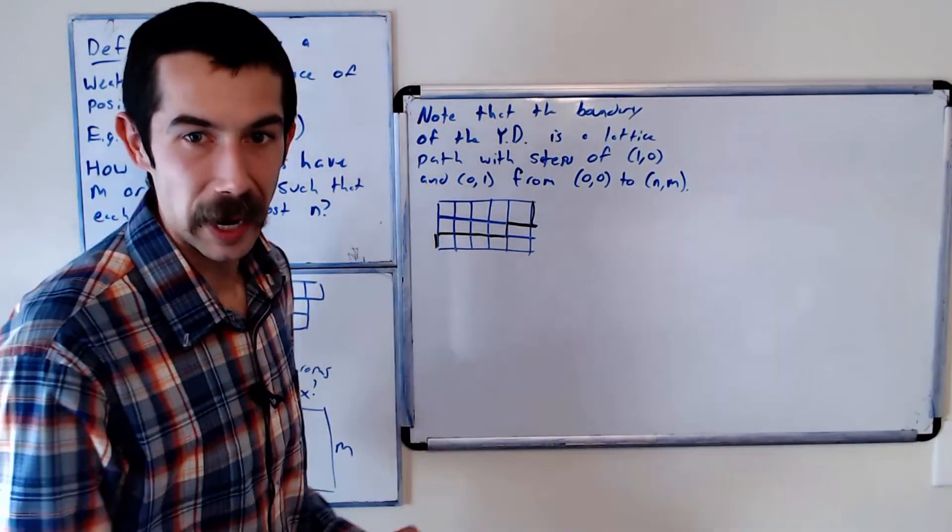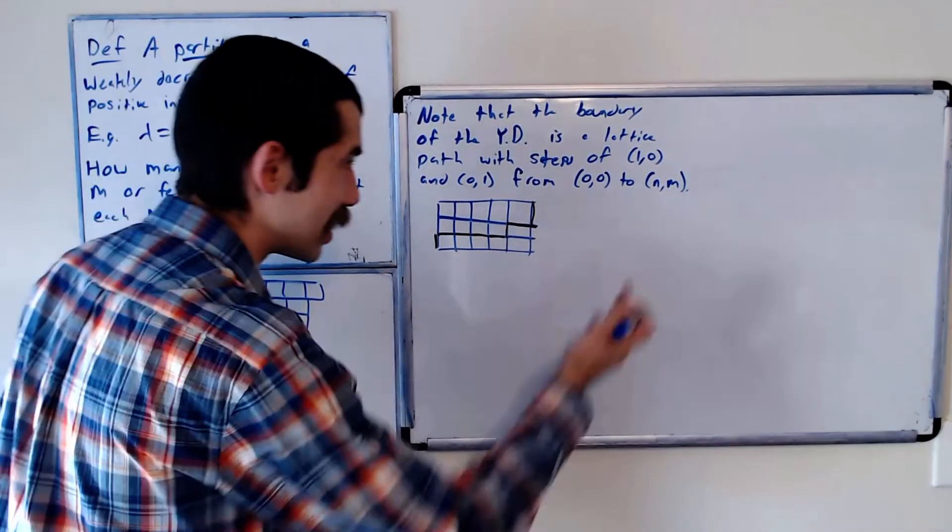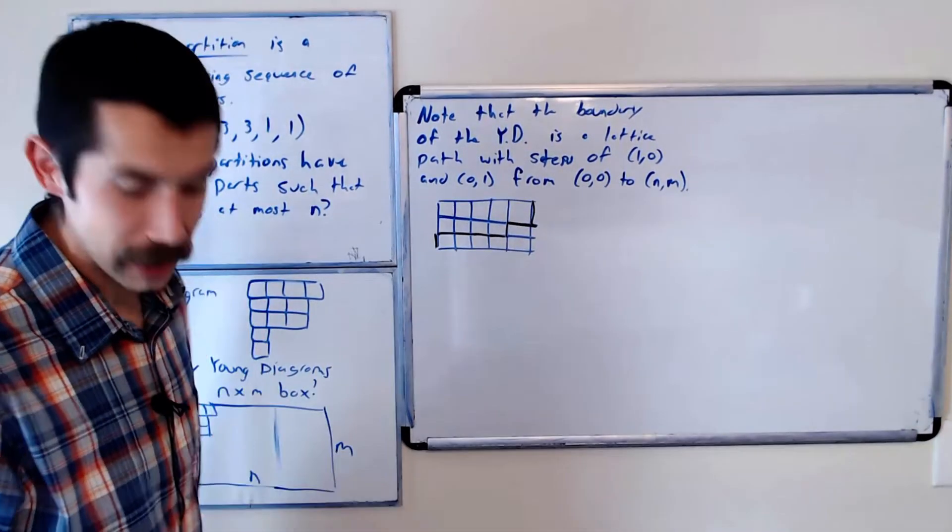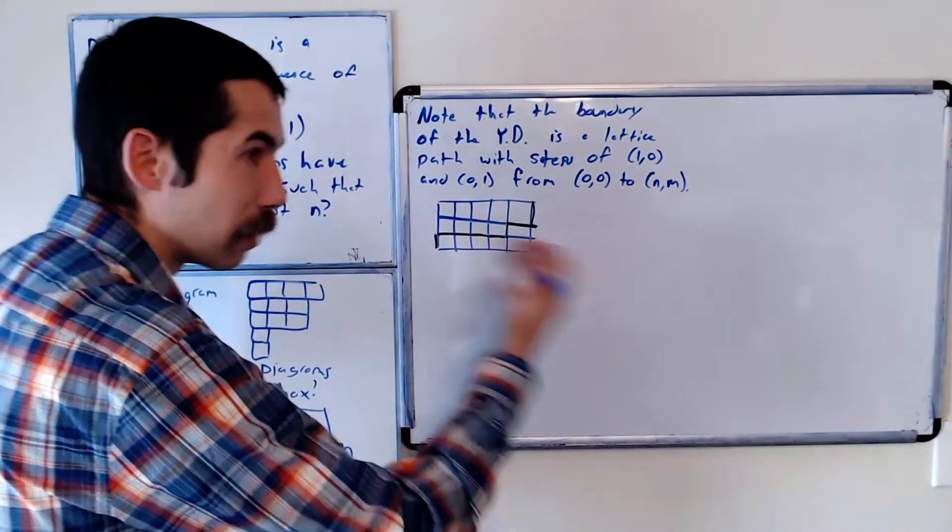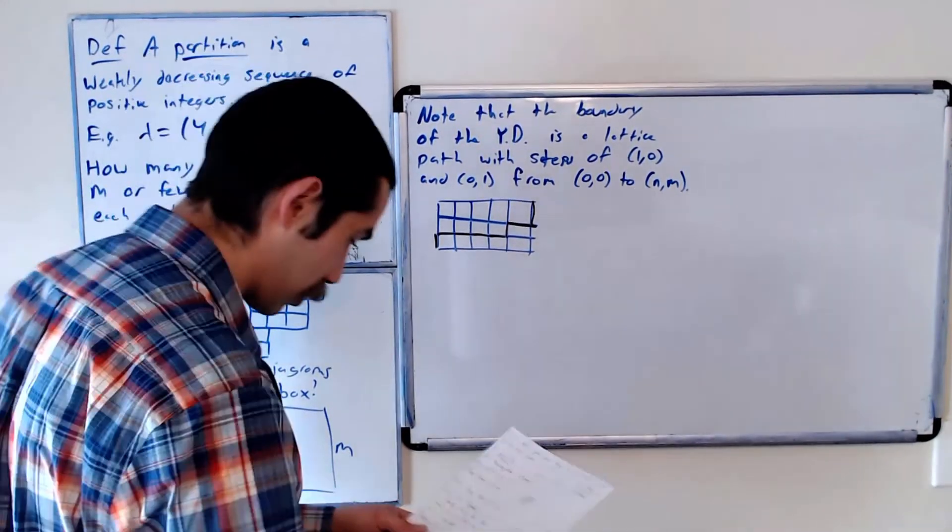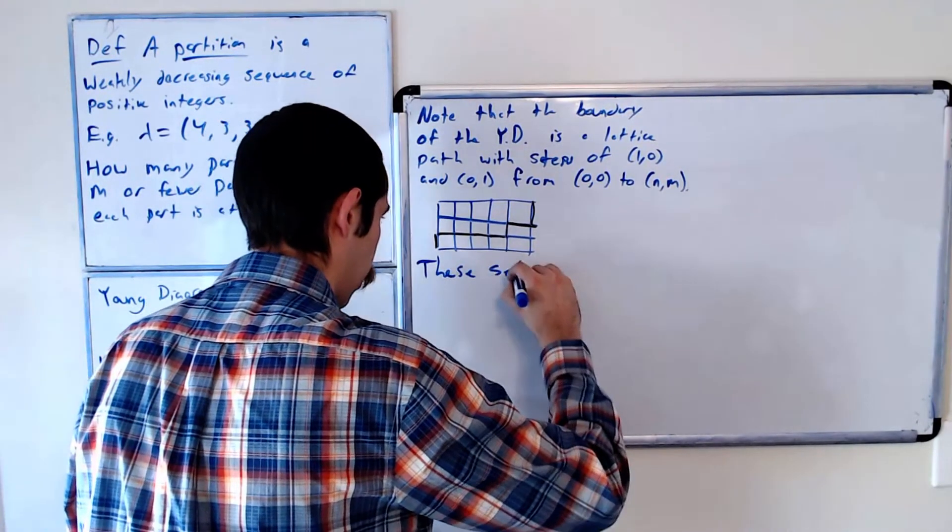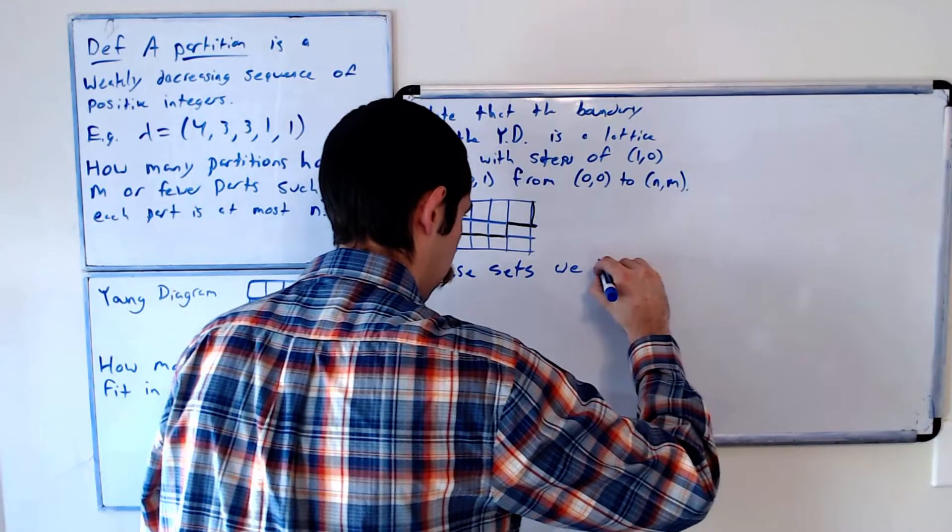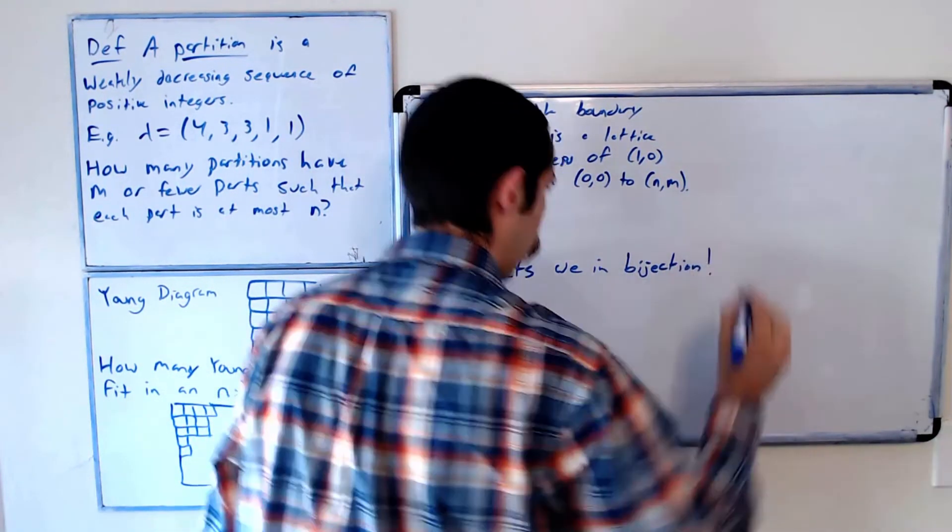It's easy to see, or hopefully I'm convincing you, that our Young diagrams are in bijection with these lattice paths.